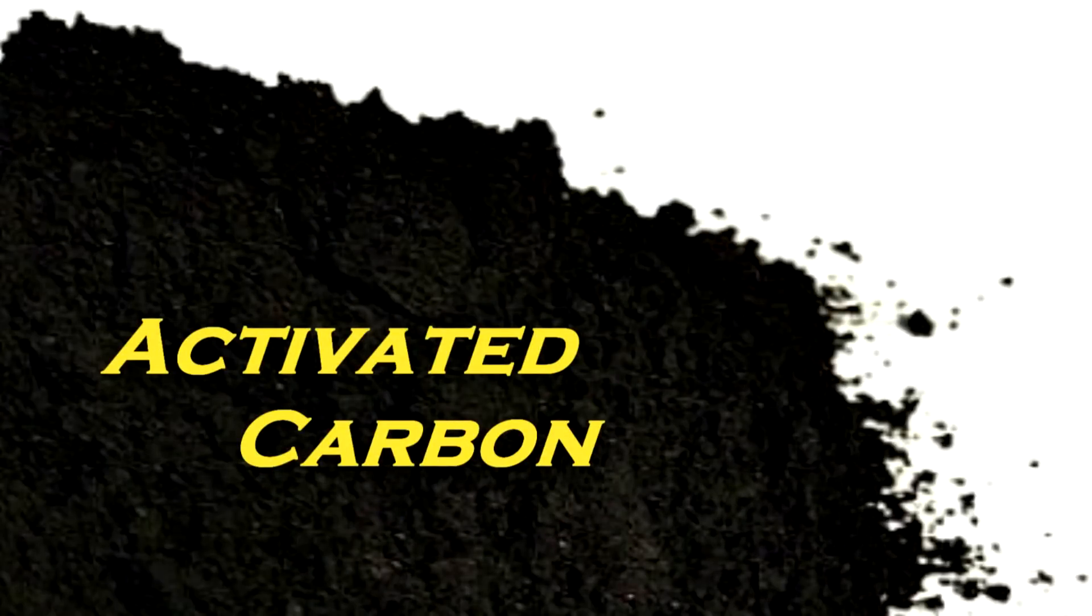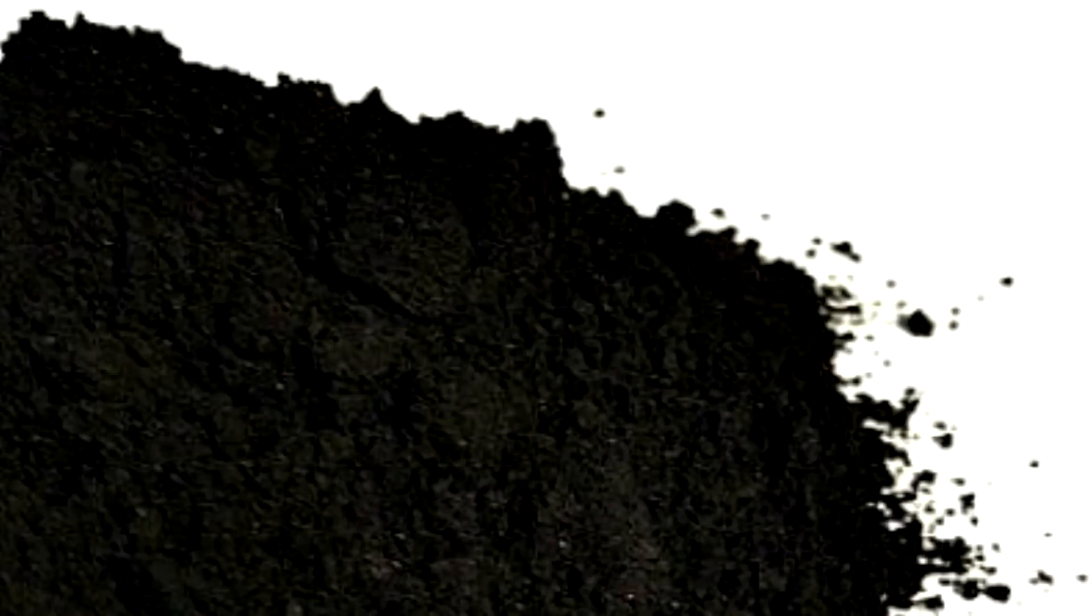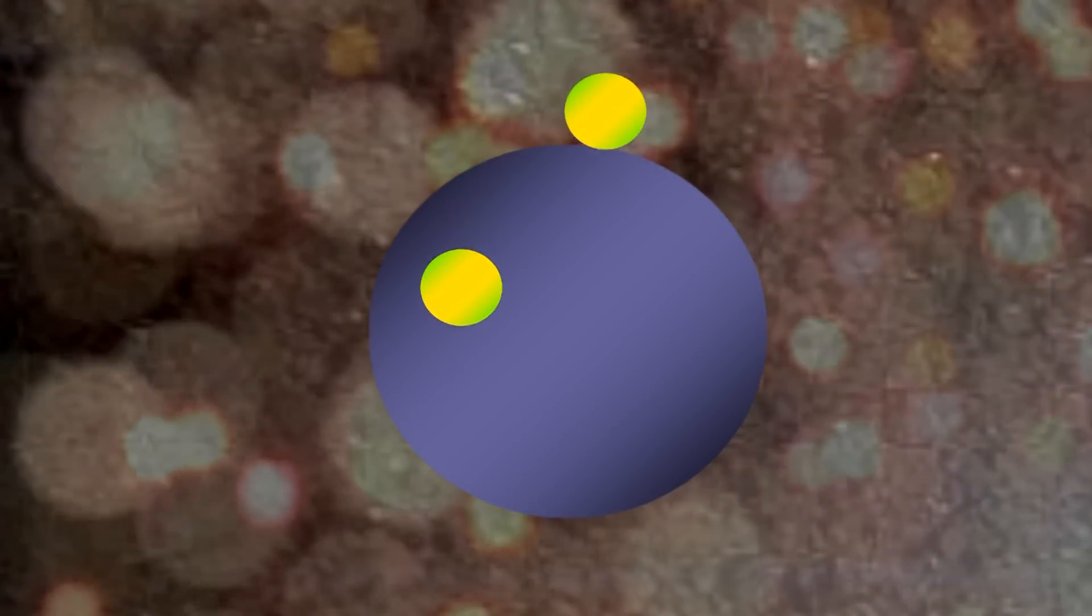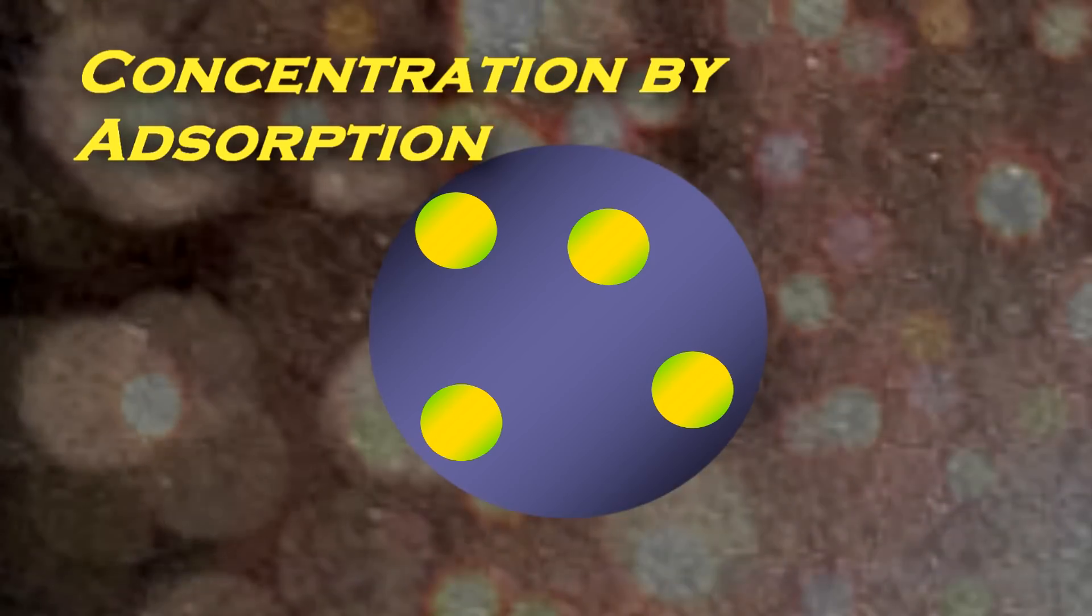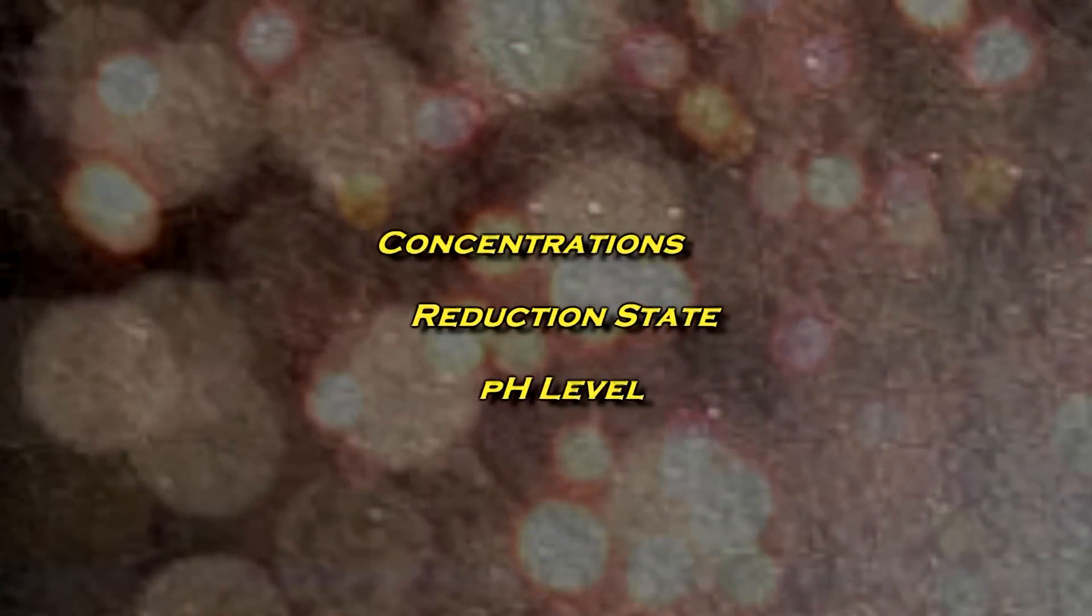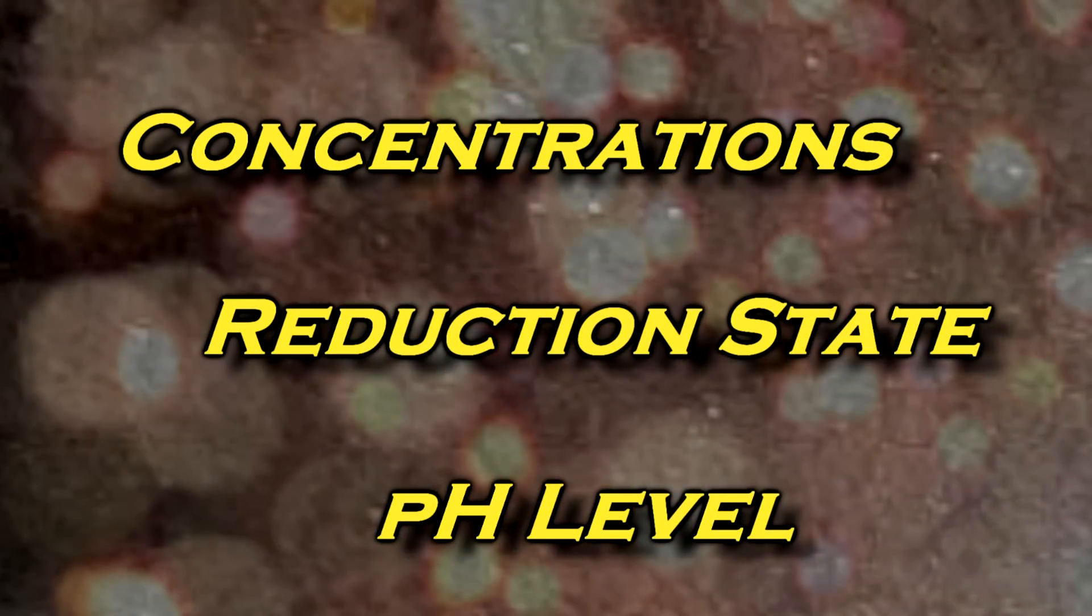Activated carbon is the third method of solution concentration and purification. Precious metal compounds attach themselves to the carbon particle surfaces the same way carbon removes impurities in drinking water filters. The chemistry of this solution passing through the activated carbon is most critical to effective separation.